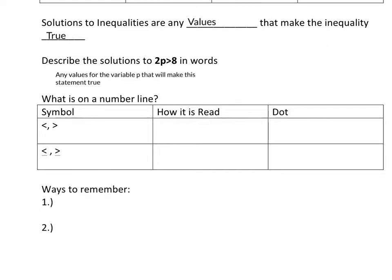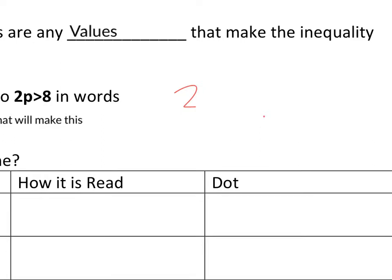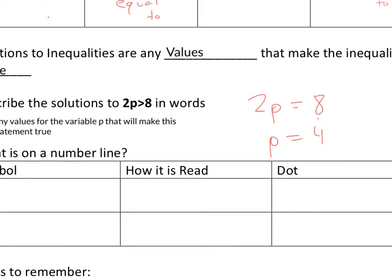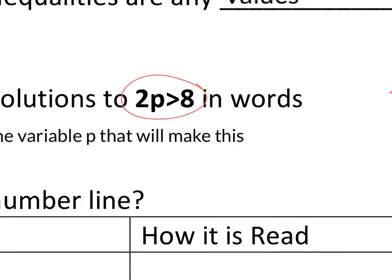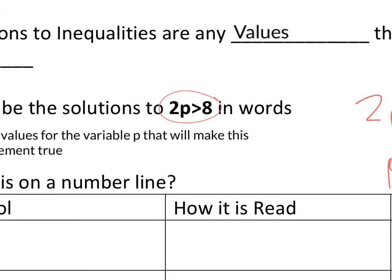A problem presents itself because with equations like 2P equals 8, there's just one solution: P equals 4. But with 2P greater than 8, there are a lot of different numbers to plug in. I could plug in 5, 6, 7, 8 — basically anything larger than 4. If I put 4 in, 2 times 4 is 8, and 8 is not greater than 8. So I can plug in an infinite number of numbers.